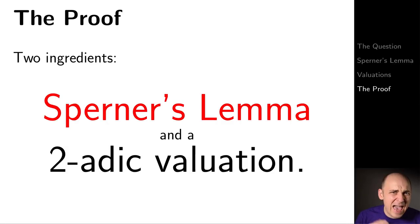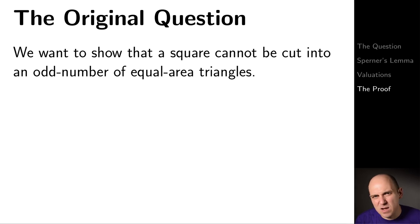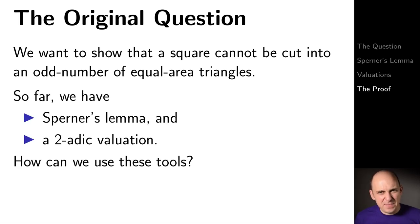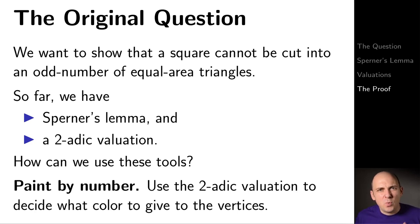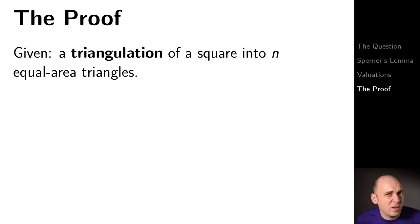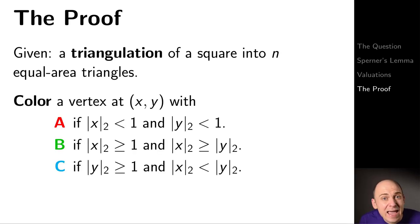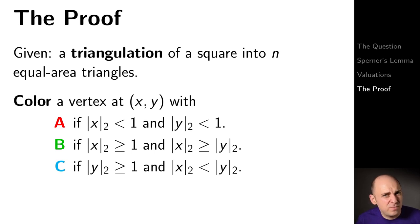We've now seen both Sperner's lemma and the 2-adic valuation. It's time to combine them. We want to show a square cannot be cut into an odd number of equal area triangles. We'll do a sort of paint-by-number, using the 2-adic valuation to decide what color to give each vertex. Given a triangulation of a square, we color the vertex with coordinates (x, y): color A if the 2-adic valuations of both x and y are less than 1; color B if |x|₂ ≥ 1 and |x|₂ ≥ |y|₂; and color C if |y|₂ ≥ 1 and |y|₂ > |x|₂.